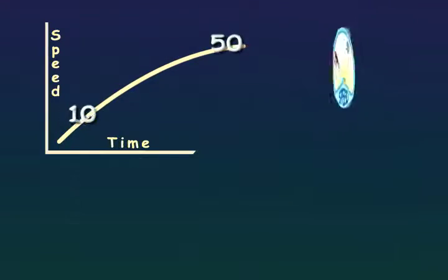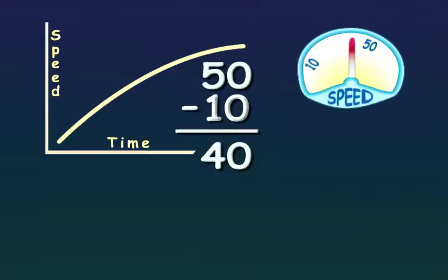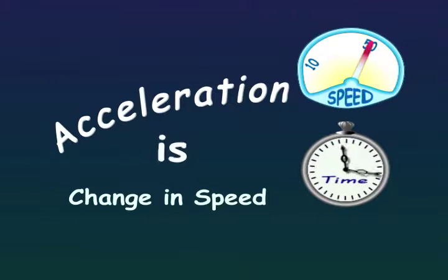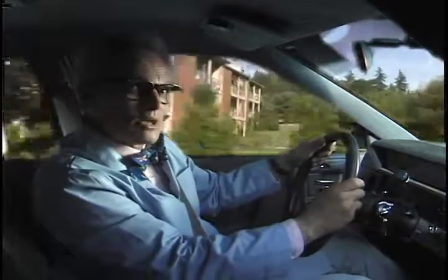The way we figure acceleration is to subtract the starting speed from the ending speed to calculate the change in speed. The change in speed is measured over time. Acceleration is the change in speed over time. It's also a change in acceleration if the car slows down — this is sometimes called negative acceleration or deceleration.